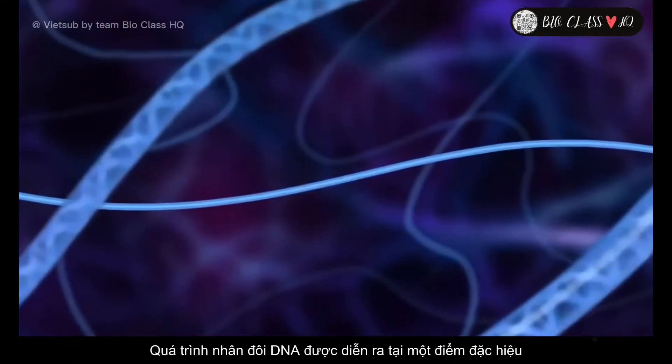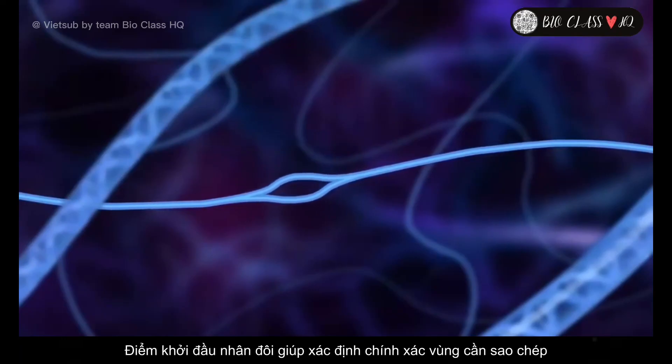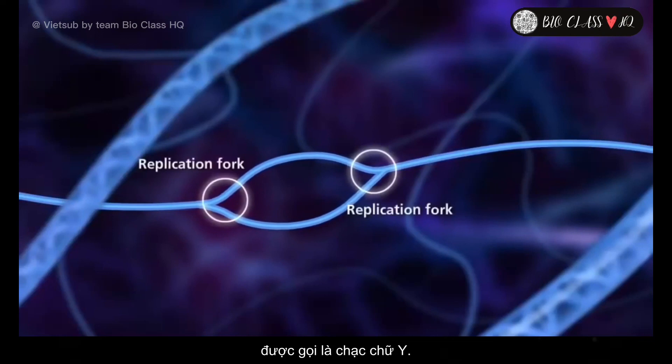DNA replication will begin at a specific area of the molecule called the origin of replication. The origin of replication denotes the area of active replication called the replication fork.